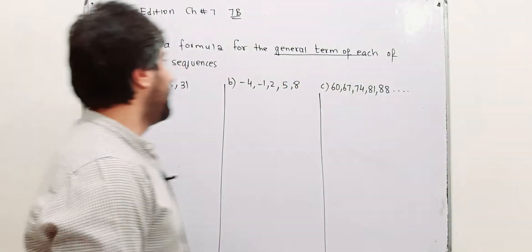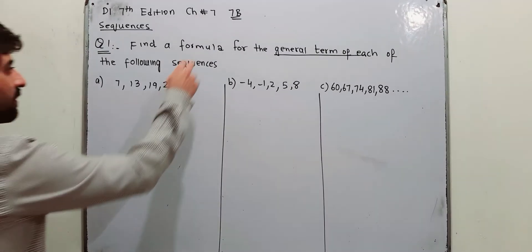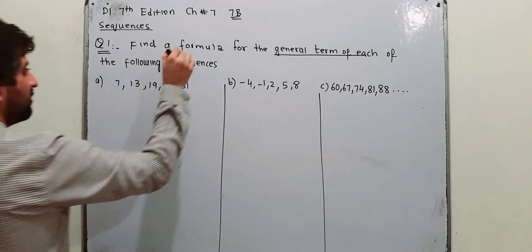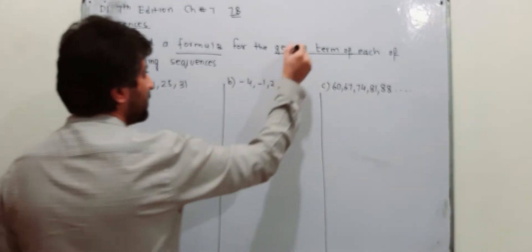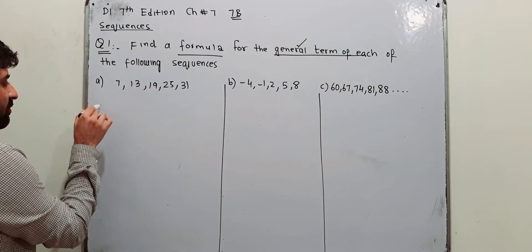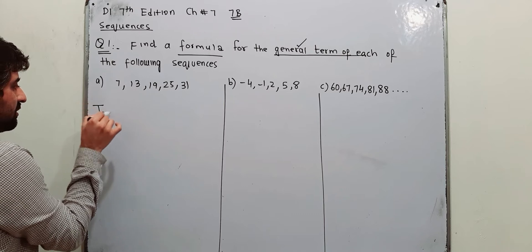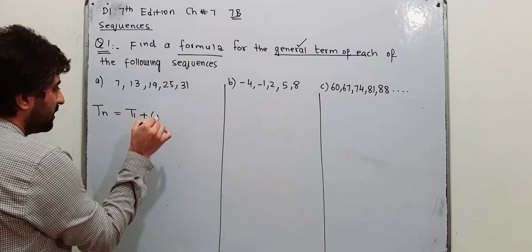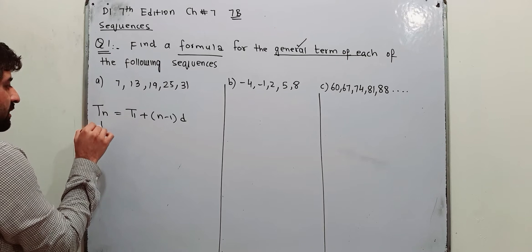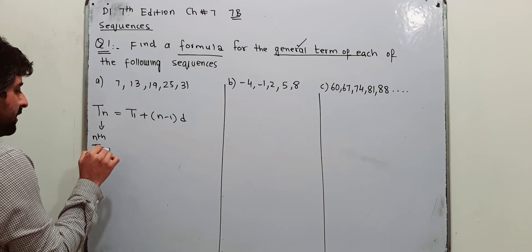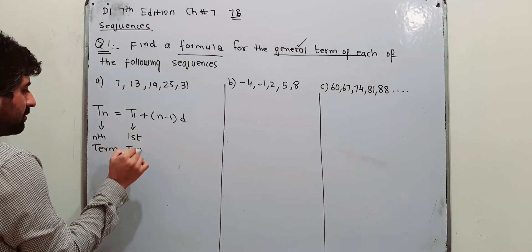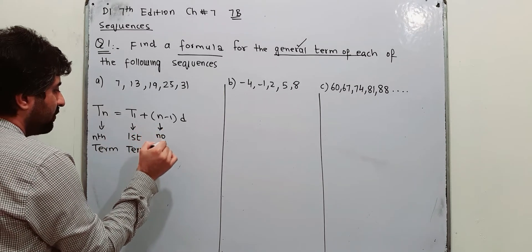Let us start from question number 1, which says: find a formula for the general term of each of the following sequences. Basically you need a formula that will give you the general term. I am writing down the formula for general term Tn: Tn is equal to T1 plus N minus 1 into D. Here Tn is the Nth term, T is for term number, T1 is the first term, and N is the number of terms.